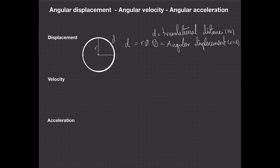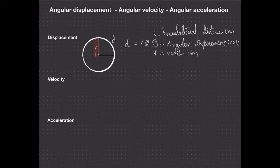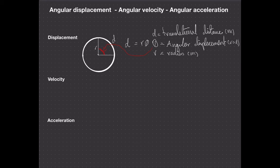And our radius, again a distance, is in meters. All we're saying is that when we have an arc or a circle and we're traveling along that, we have a radius and an angle — that angle moved or rotated through is our angular displacement. The actual distance along the edge is our translational distance, which is how much of the circle's arc would have been in contact with the ground if it was moving as a wheel. That arc length is our angular displacement theta.